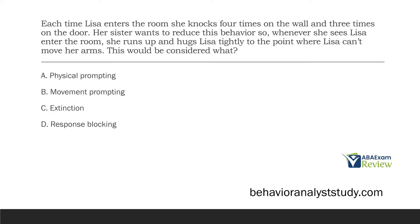A, physical prompting: is she prompting her to do anything? No, she's preventing her from doing something. B, movement prompting: is she prompting her to do anything? No, she's preventing her from doing something. C, extinction: now, extinction versus response blocking — are they the same? They are not. Response blocking is not extinction. In order to implement extinction, you have to withhold reinforcement for a response. In order to withhold reinforcement, that response must occur. If you're blocking that response from occurring, you can't be putting it on extinction.